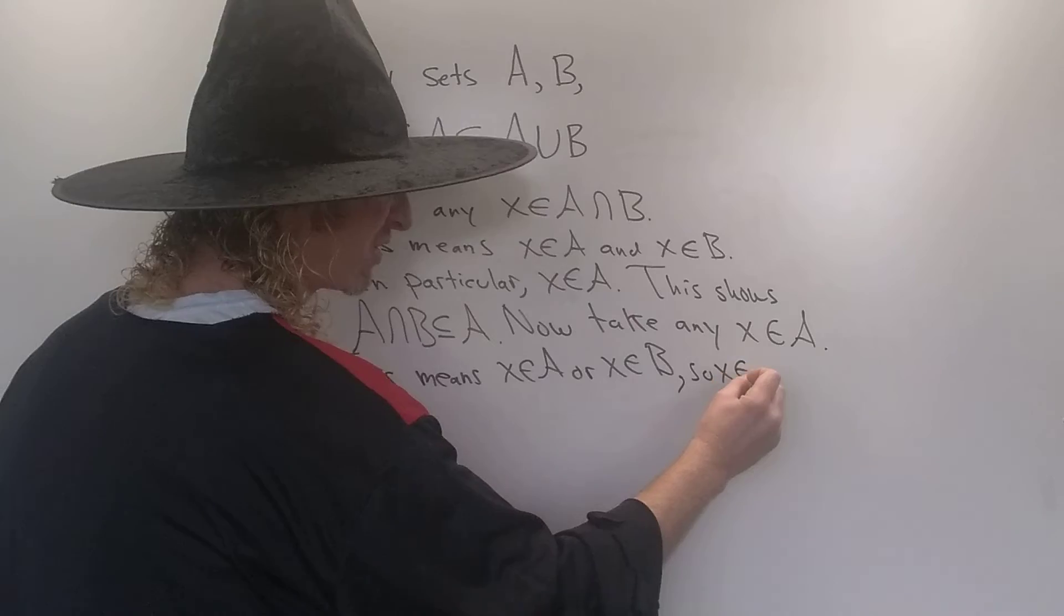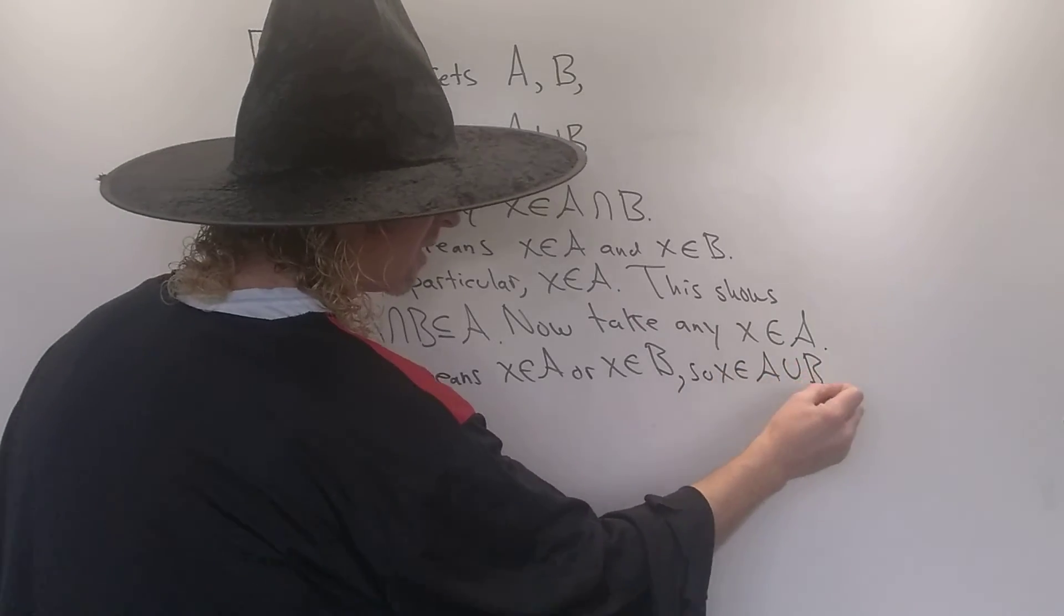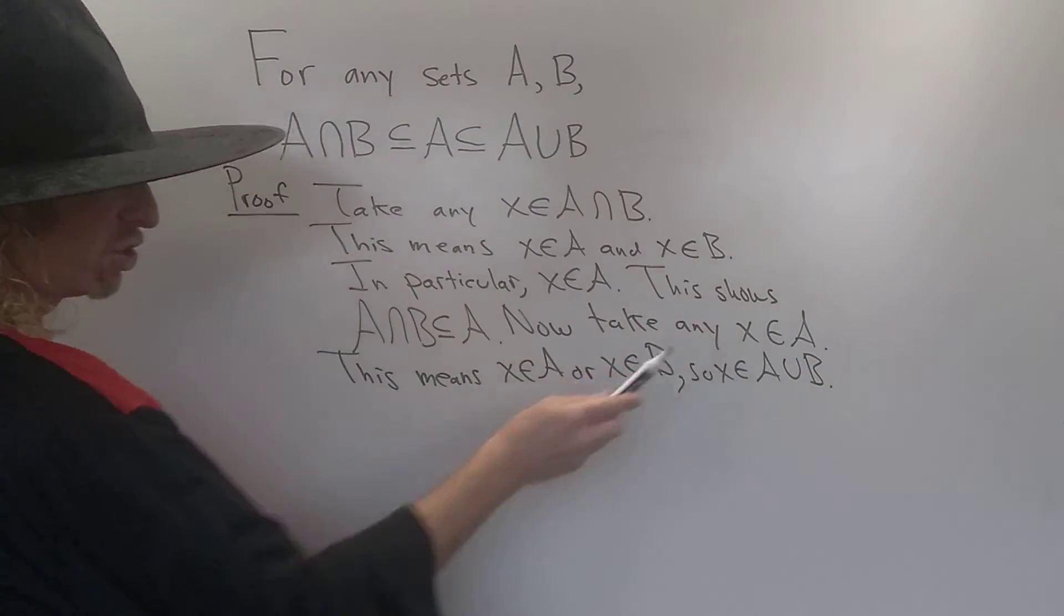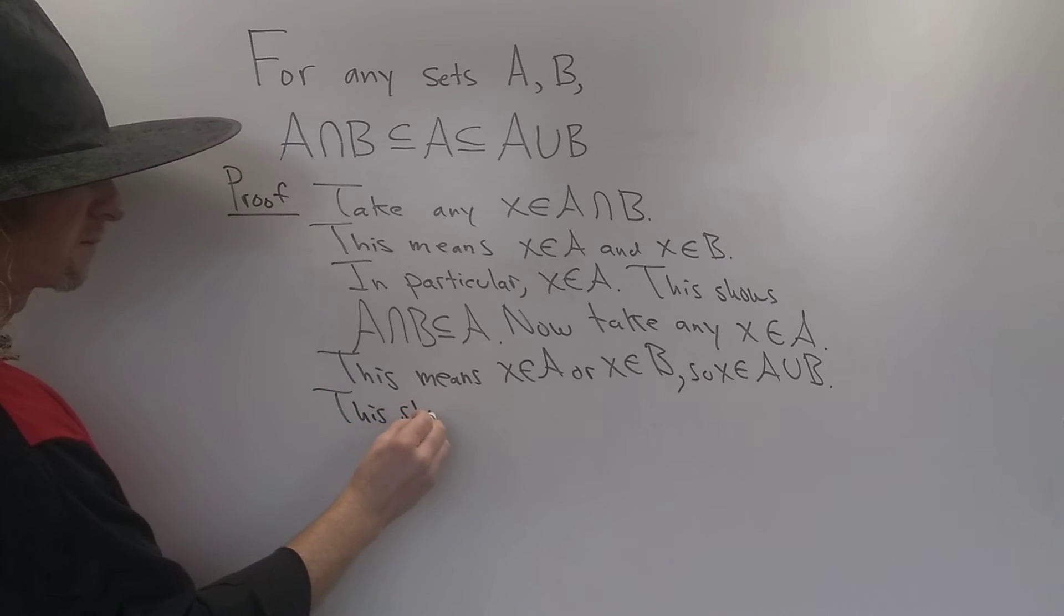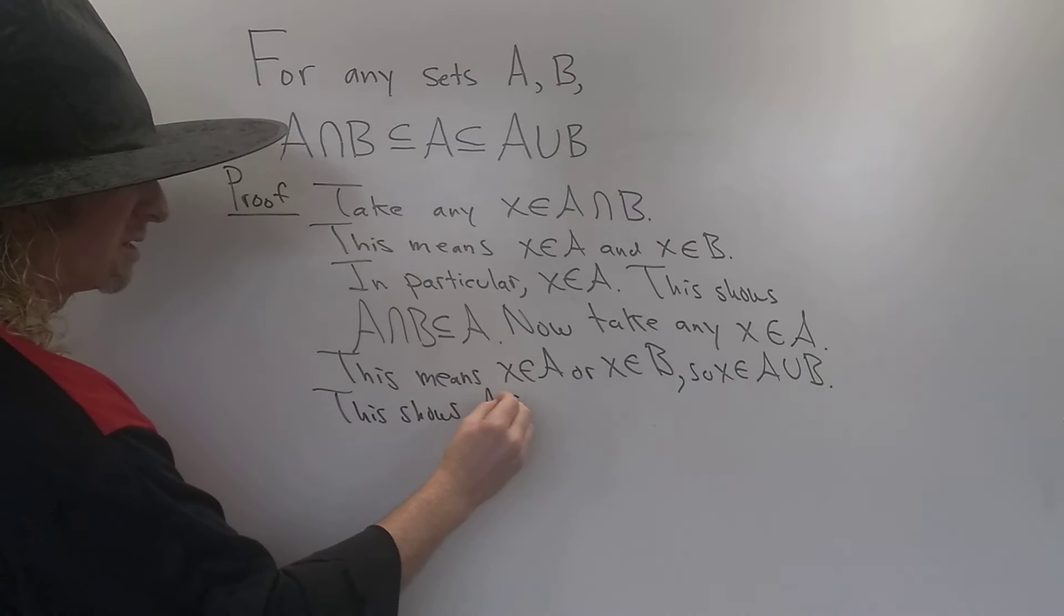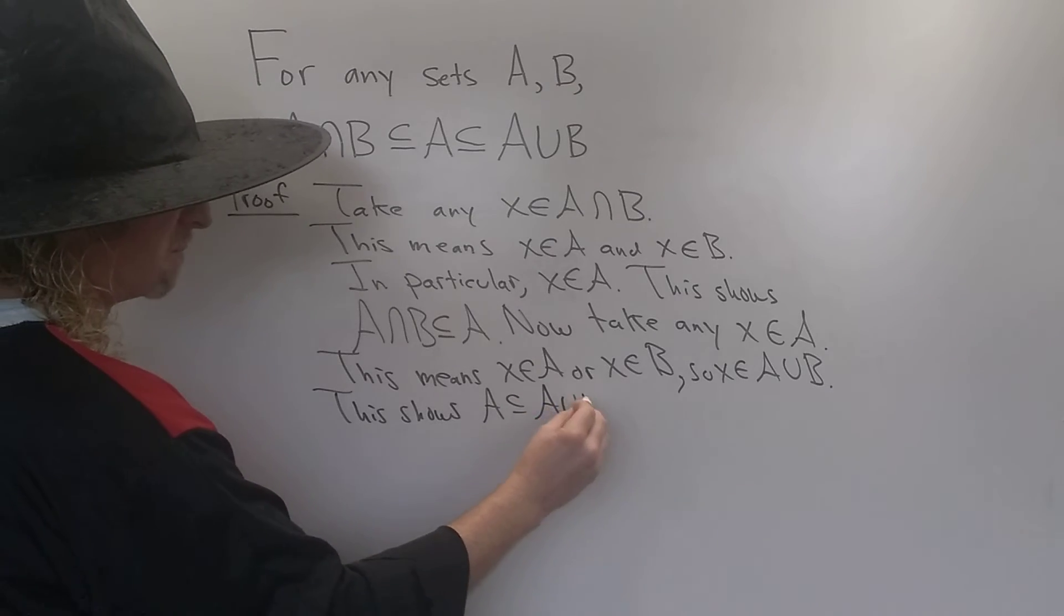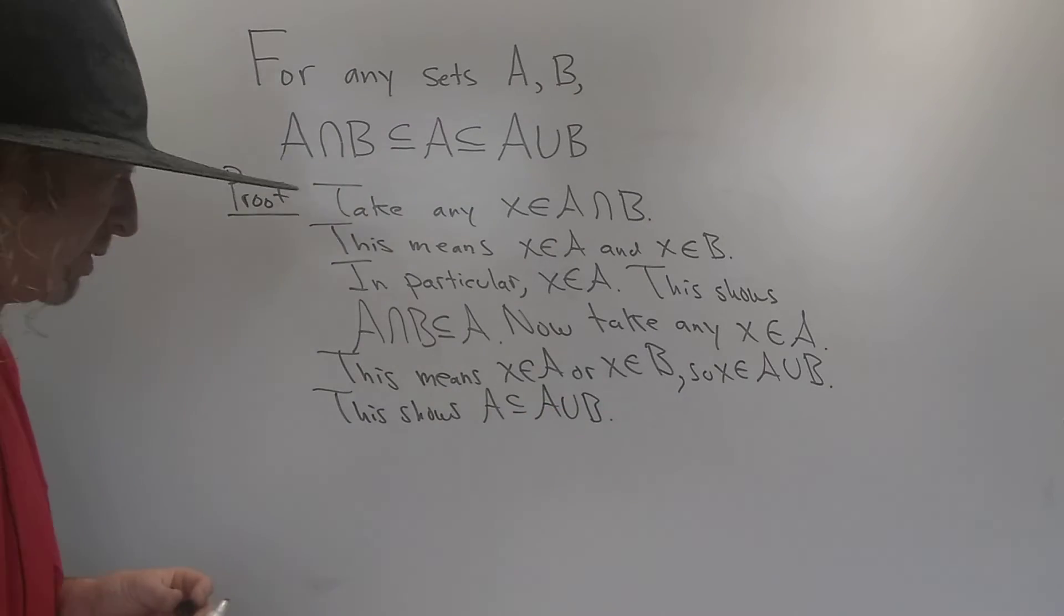So this is precisely the definition of union. So we started with an X in A, and we showed it's in the union. So this shows that A is contained in A union B. So that completes the proof.